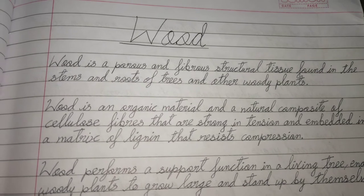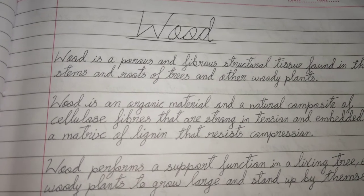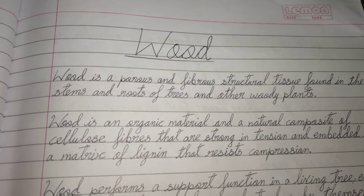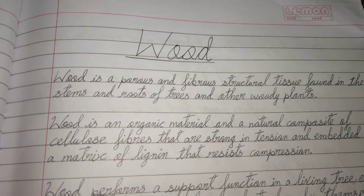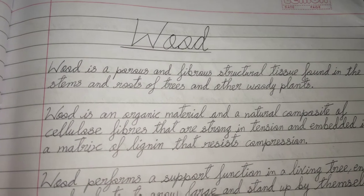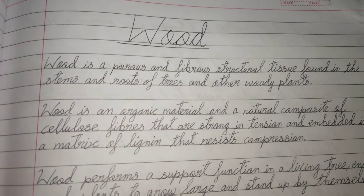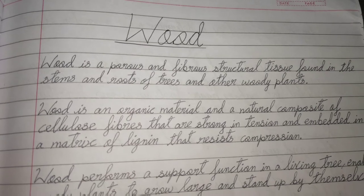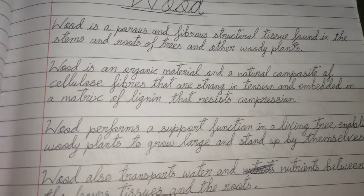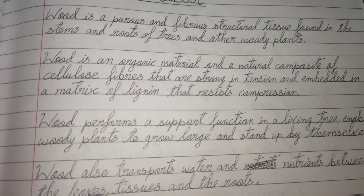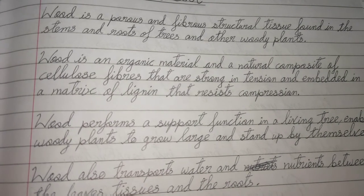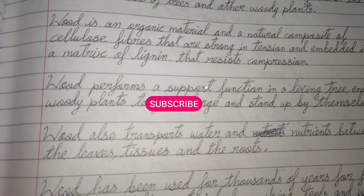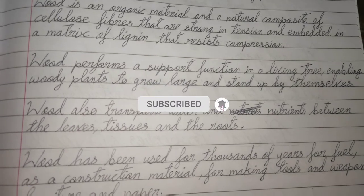In today's video we are going to learn about wood. We will also learn about various types of woods and its uses. We will also study about its physical properties and chemical properties. Wood is a porous and fibrous structural tissue found in the stems and roots of trees and other woody plants. Wood is an organic material and a natural composite of cellulose fibers that are strong in tension and embedded in a matrix of lignin that resists compression.